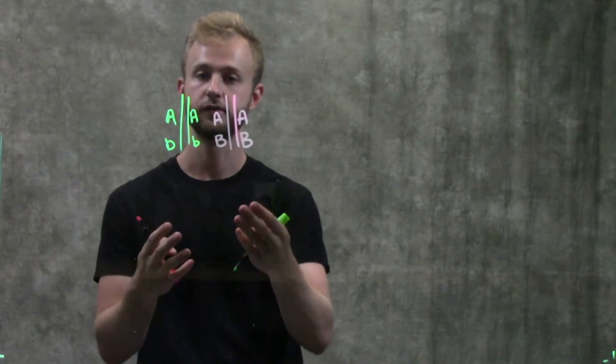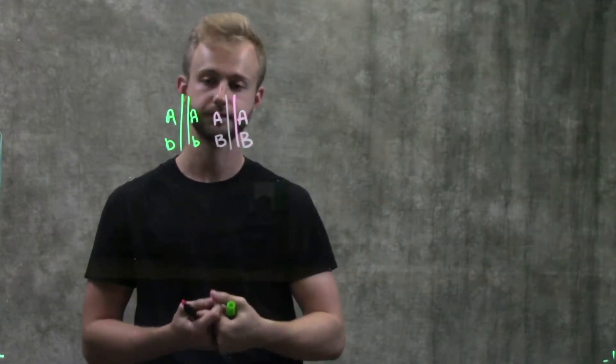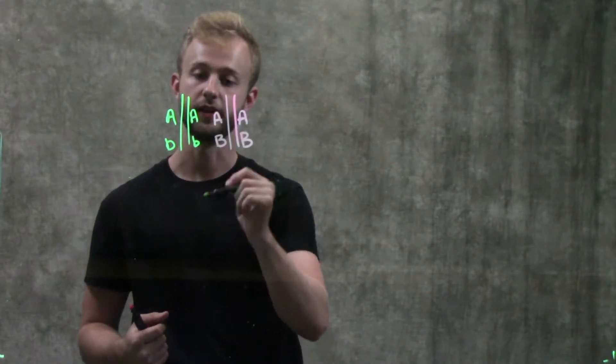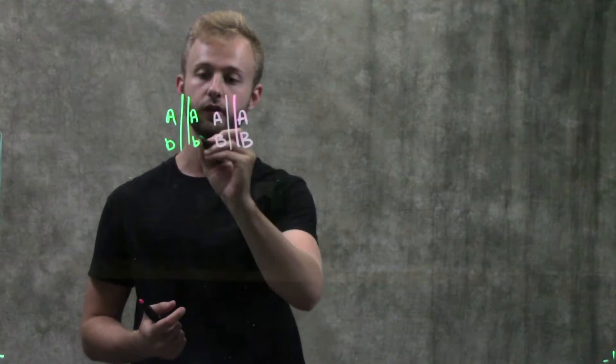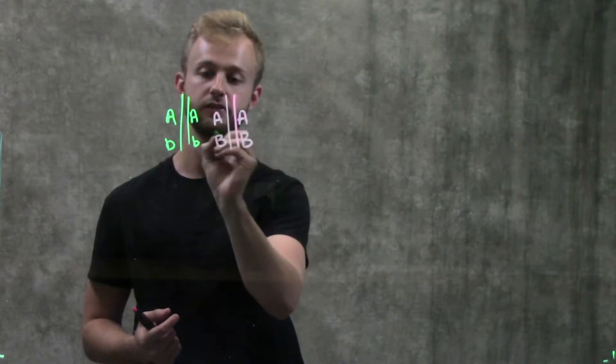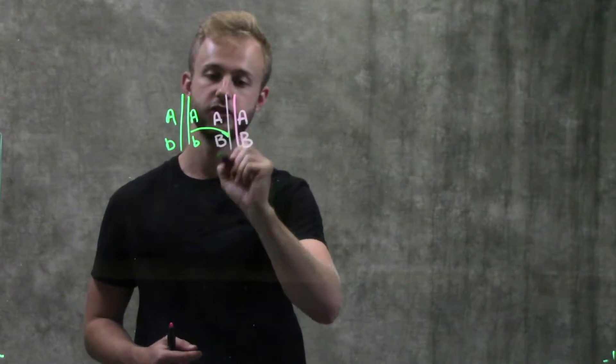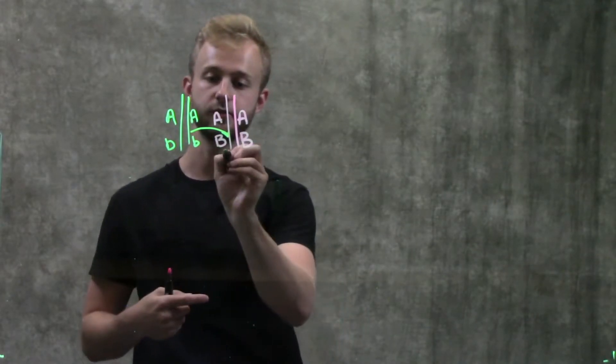So now these are homologous pairs. During meiosis, they'll pair up during prophase one and that's when crossing over will take place. With crossing over, it's going to be between these two chromatids on the inside here. We'll have this gene that gets switched with this one right here.